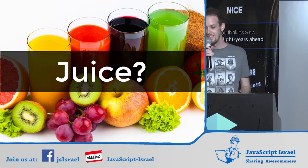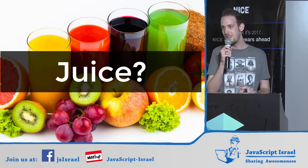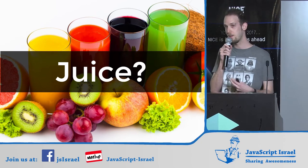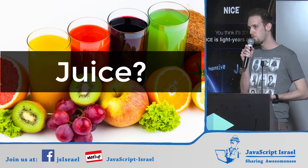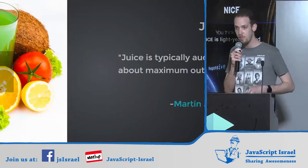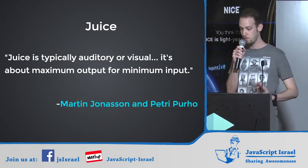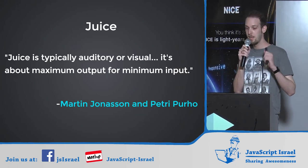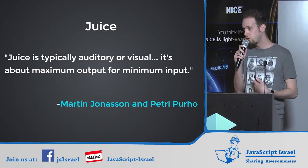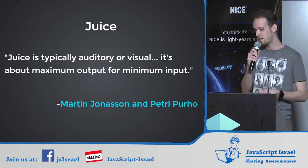The answer is juice. Juice is a game design term that explains the emotional connection between a player and the game. It's not about the game mechanic — not about what you do when you press left and right or shoot. It's about how the game makes you feel, your emotion and connection to it. Game designers Martin Jonasson and Petri Puro say juice is typically auditory or visual — it's about maximum output for minimum input. A juicier game has much more connection and oomph, and it just feels a lot nicer.